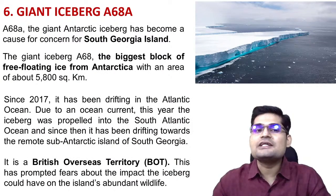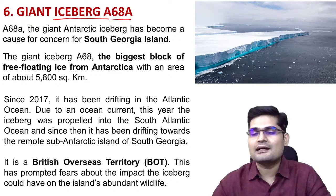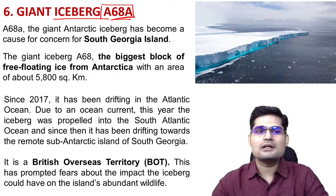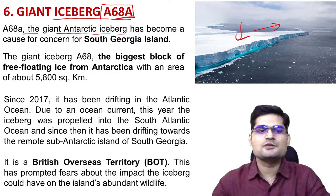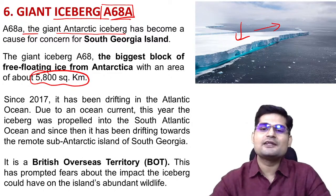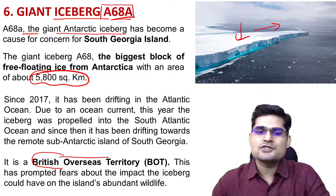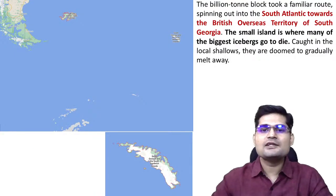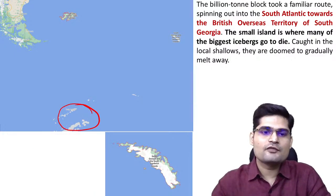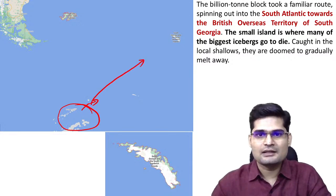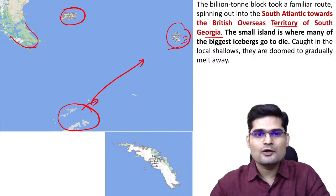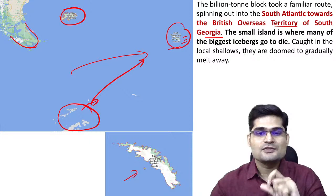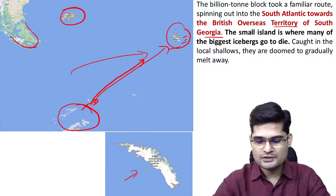The sixth topic is the giant iceberg A68A from Antarctica, an enormous Antarctic iceberg of about 5,800 square kilometers that broke off and traveled toward the Atlantic, heading toward the British Overseas Territory of South Georgia and the South Sandwich Islands. On the map, this is near the tip of South America, with the Falkland Islands also visible in that region.